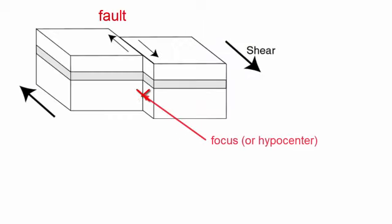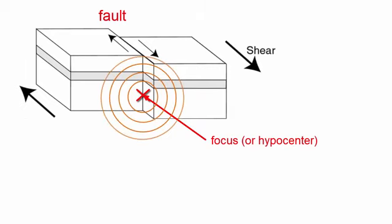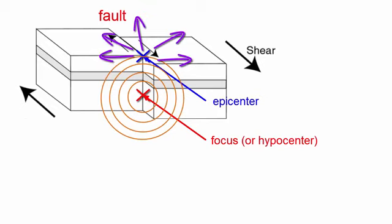The spot along the fault where friction is first overcome and the slip happens is called the focus of the earthquake. The spot on Earth's surface directly above the focus, the place that will first receive the energy waves that emanate out of the focus, is called the epicenter.